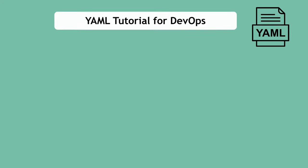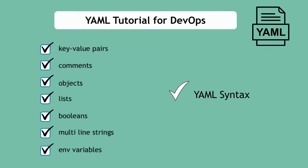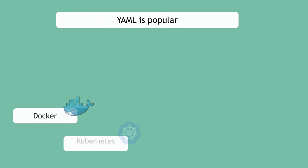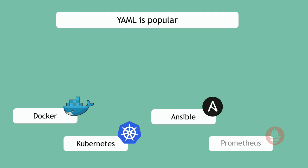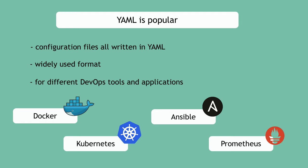In this video, I will explain all about YAML. We will see what YAML is used for and go through the syntax of how to write a valid YAML file. As you've seen in my tutorial videos about Docker, Kubernetes, Ansible, Prometheus, etc., I have shown example configuration files all written in YAML because it has become a widely used format for writing configurations for many different DevOps tools and applications. That's why when using these tools, it's important to understand the details of YAML syntax and its main concepts.